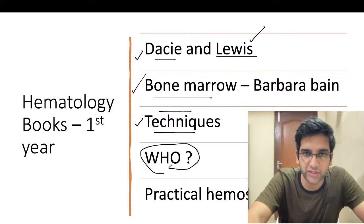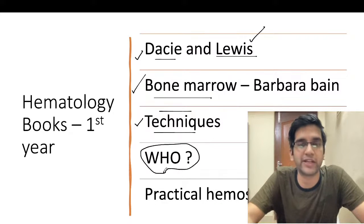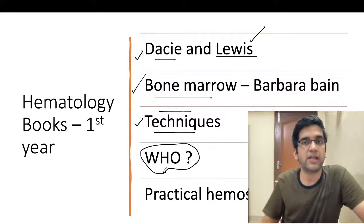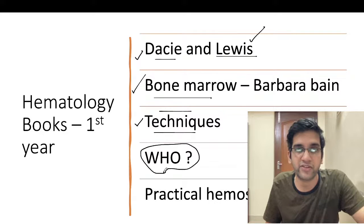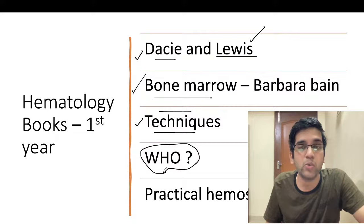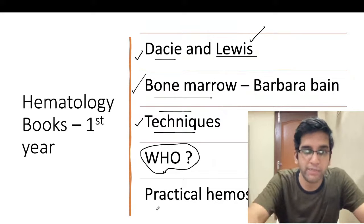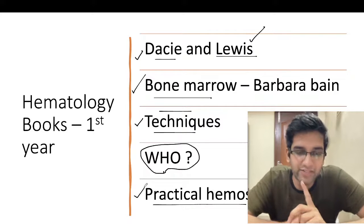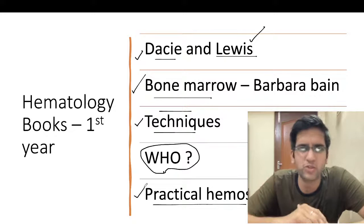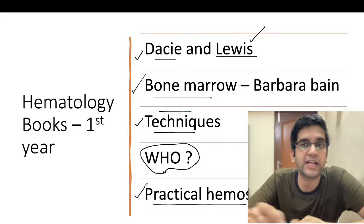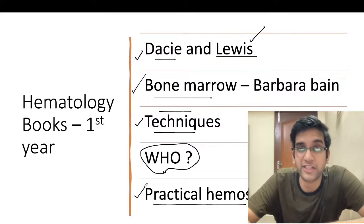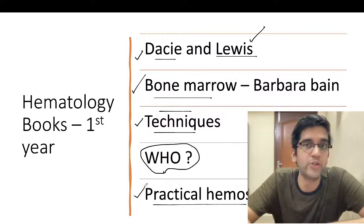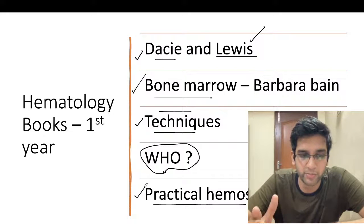Do you need to read WHO classification in the first year? My answer is no — WHO is only for reporting guidelines, so reading it in first year may not be required unless you have conferences, upcoming tests, or seminars. In first year, my focus is on lab techniques, normal bone marrow aspirate, normal CBC, and how to interpret counter values. For PT, APTT, and coagulation studies, there's a website called practicalhemostasis.com — it's free and very detailed on how coagulation is done, interpreted, and troubleshot. I don't have any standard book for coagulation, so please use that website.